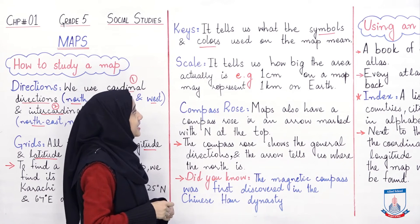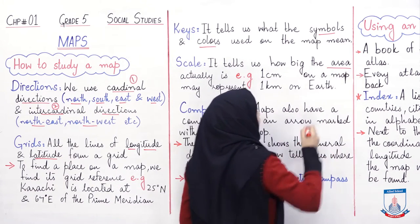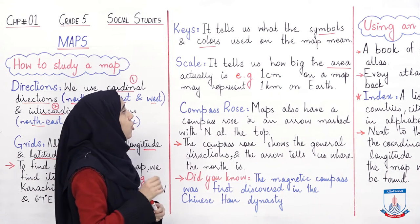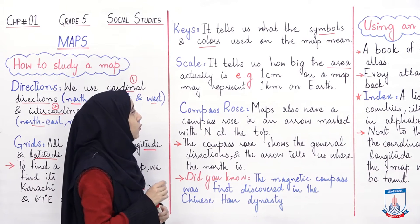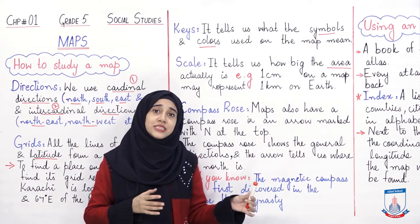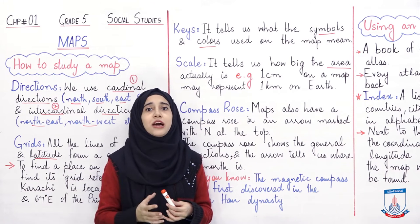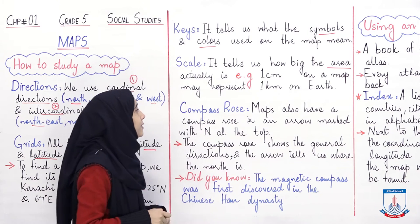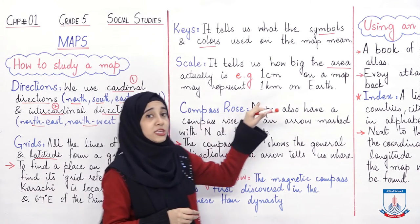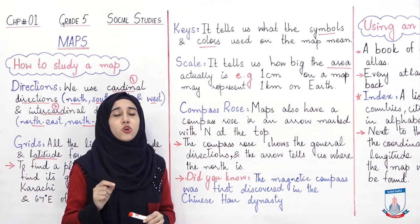Now let's talk about scale. Scale kya hota hai — it tells us how big the area actually is. Yarni ke hume yeh batata hai ke map per agar koi area shown hai toh woh exactly kitna bada hai. For example, one centimeter on a map may represent one kilometer on earth. Ek map ek paper per banawa hota hai — agar koi lambi sadak hai toh aap puri sadak uthake map per nahi la sakti. Is liye lines draw ki jati hai aur ek scale liya jata hai. Agar ek line draw ki gai hai jo ke takriban one centimeter hai, toh phir uska matlab yeh hoga ke it is one kilometer on earth.